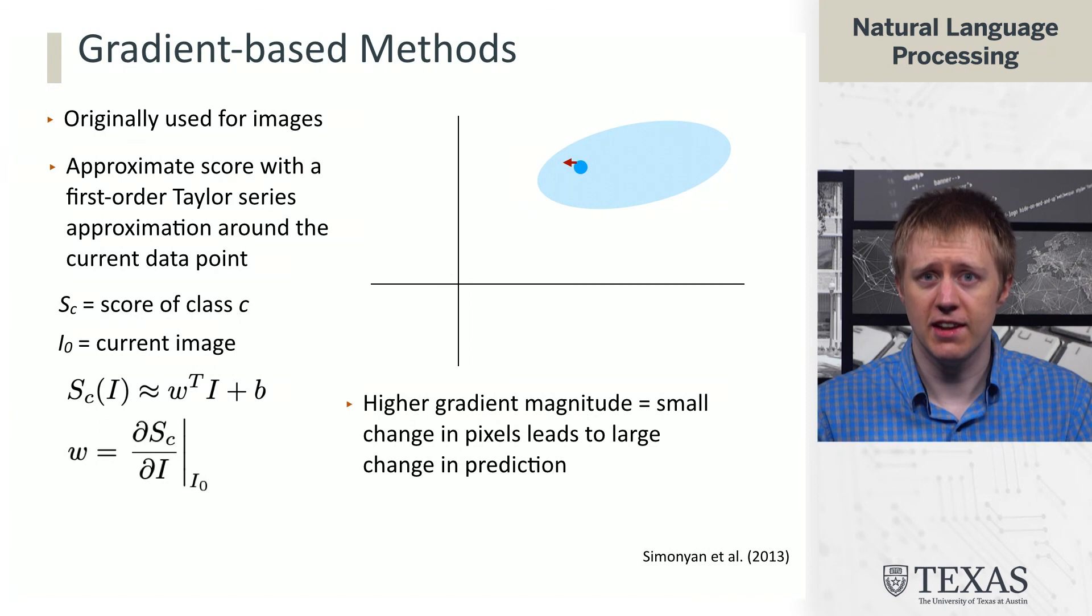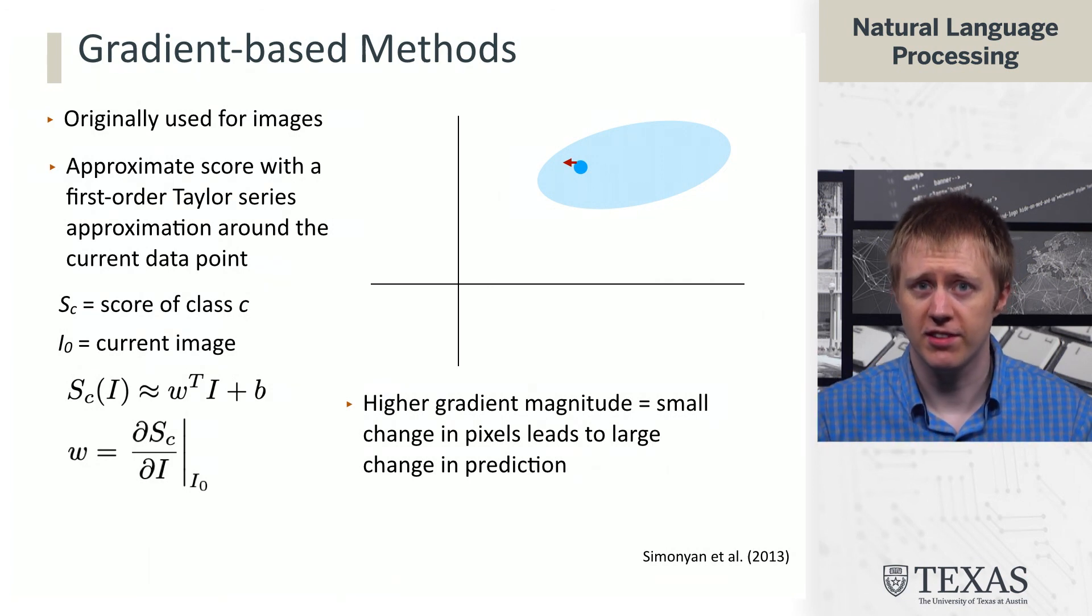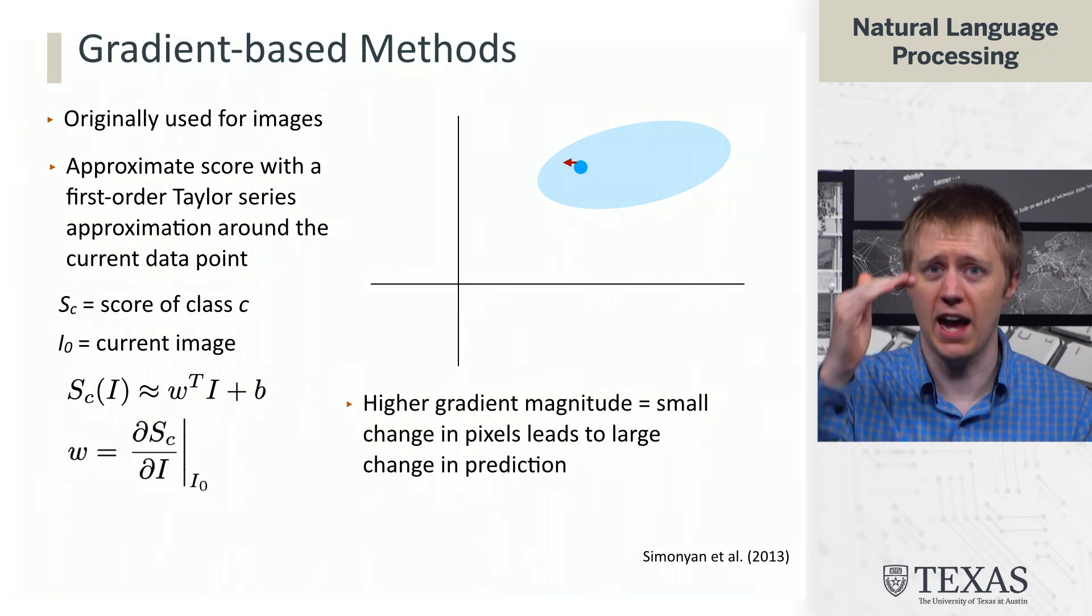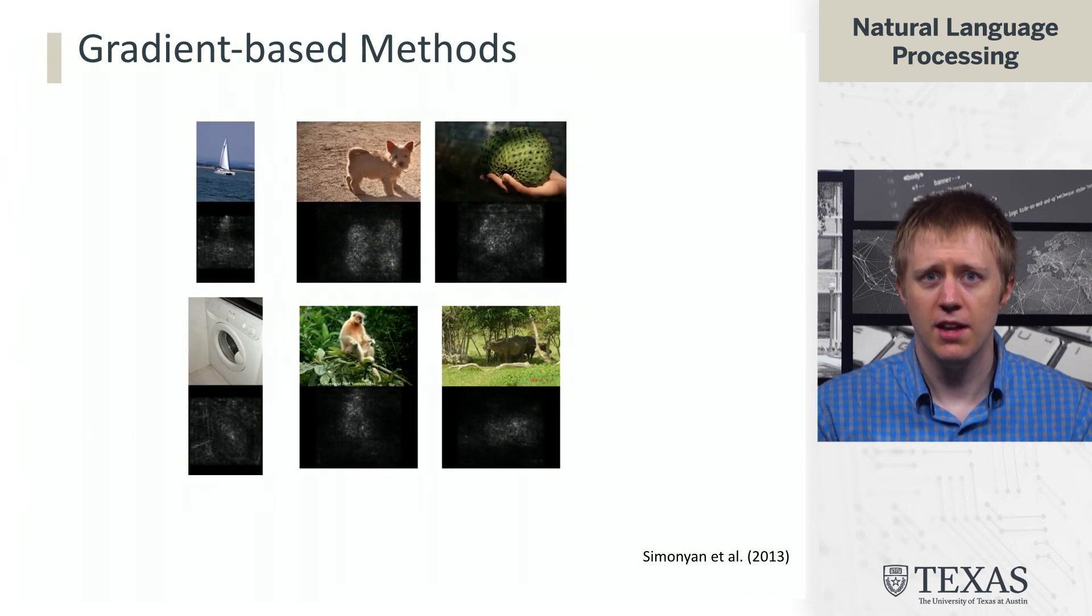So what this tells us is that, let's say there's some pixel that has a very high gradient magnitude. What that says is if I change this pixel, then I will change my prediction by a lot. And that tells us that this pixel maybe is very, its value is very important. The model seems very sensitive to it, and so if it had a lower value in this counterfactual way of thinking about things, then the model would make a very different prediction.